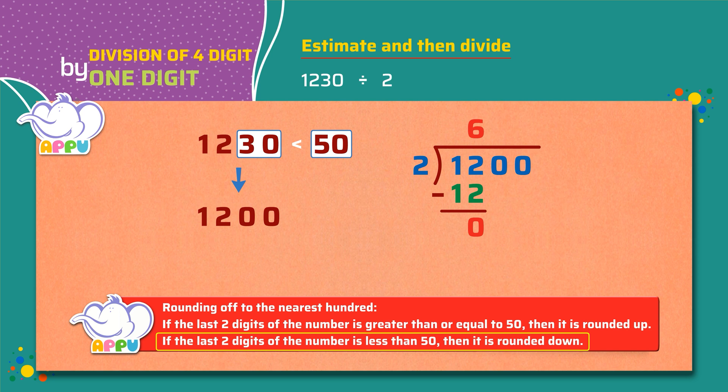Next, we bring down the number in tens place which is 0. So the number now is 0. We cannot divide 0. So we write 0 to the quotient.